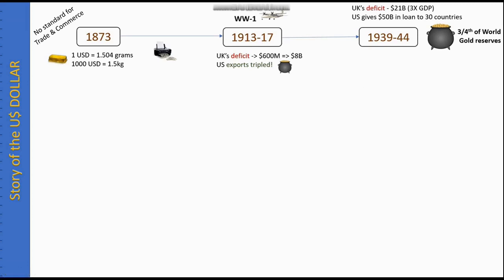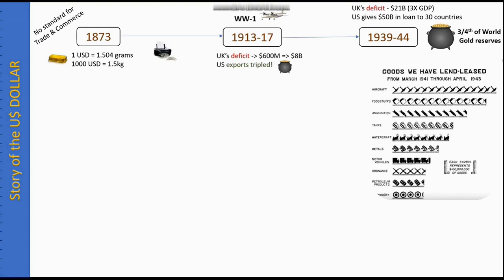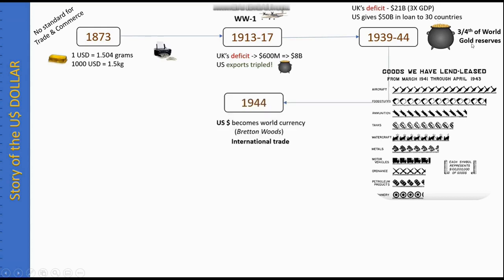At the same time, the US economy was thriving through exports, which is how they gained 70 percent of the world's gold reserves. This was driven by the Lend-Lease Agreement signed in the early 1940s during WWII, where the US exported aircraft, food, ammunition, watercraft, machinery, and petroleum products. In return, other nations paid in US dollars or gold. Since those nations could not print US dollars and needed goods for war, they paid in gold. The US also gave 50 billion dollars in loans to 30 countries, and many nations began accumulating debt to the United States.